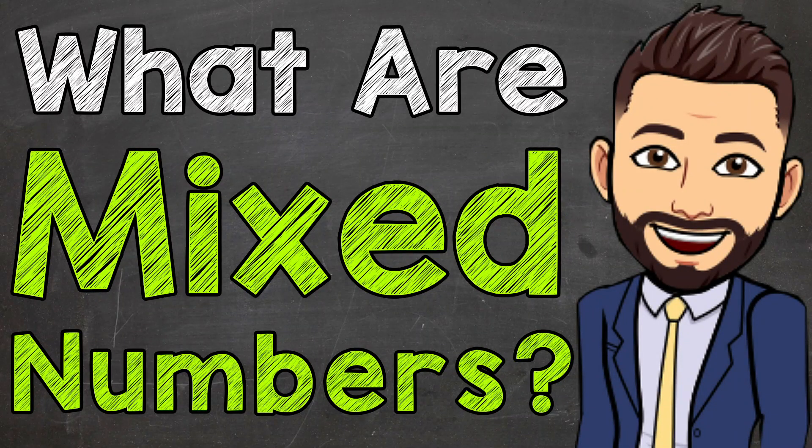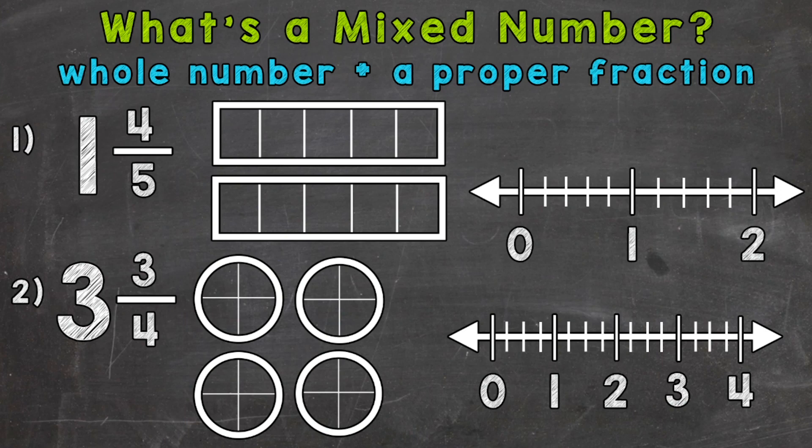Welcome to Math with Mr. J. In this video, I'm going to cover what are mixed numbers. We have two examples that we're going to go through together in order to get this down. Mixed numbers are whole numbers and a proper fraction together — so a whole number plus a proper fraction — and they help us represent values in between whole numbers.